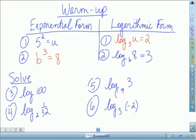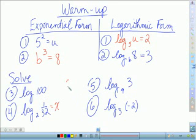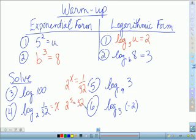For number 4, that's going to be log base 2 of 1 over 32 equals x, which means 2 to what power equals 1 over 32? Well, remember, 2 to the 5th equals 32. So I need to flip that — I need to make the numerator become the denominator, which means x is going to be negative 5, because negative exponents tell us to flip.